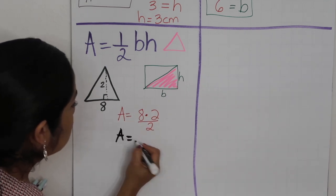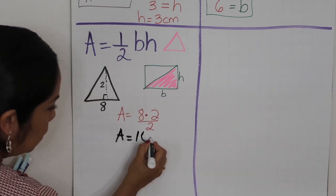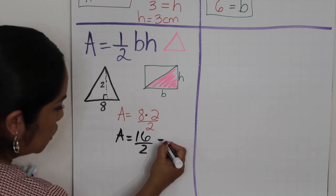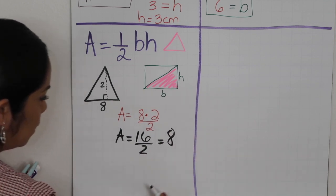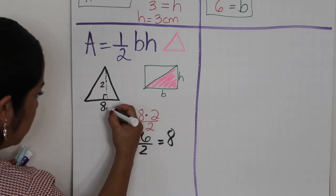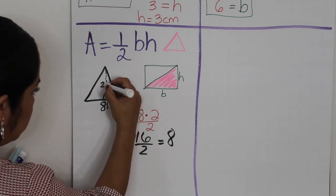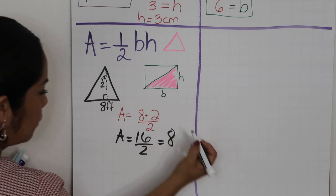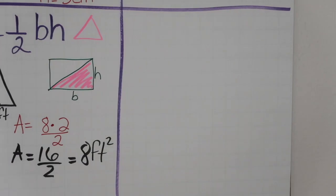So A equals 8 times 2, which is 16 divided by 2, which equals 8. I forgot to put units, so I'm going to say feet for both dimensions, making the area 8 square feet.